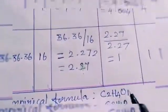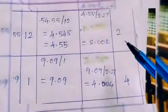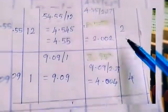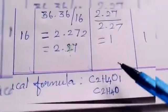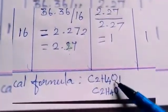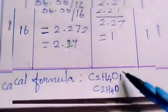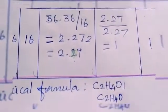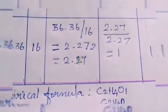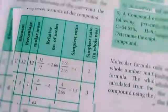Working through the elements C, H, and O, we get C, H4, and O1, giving us the empirical formula CH4O.